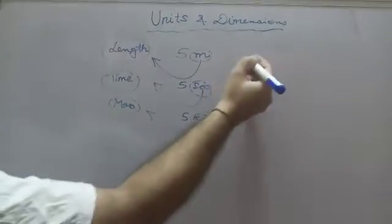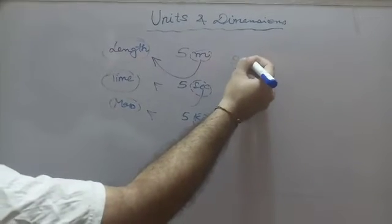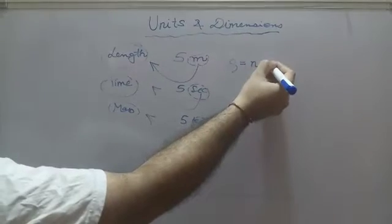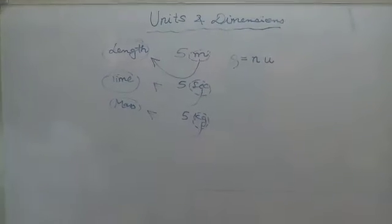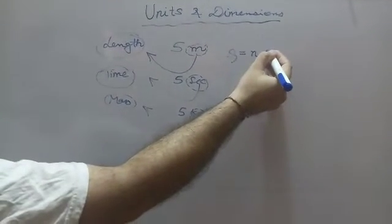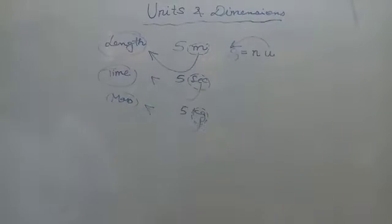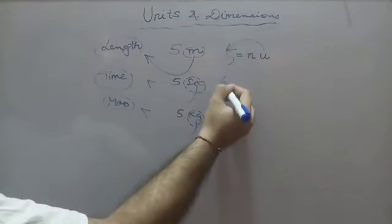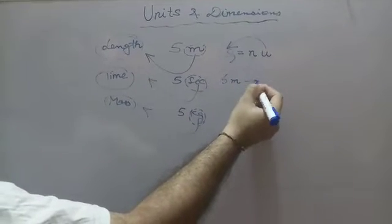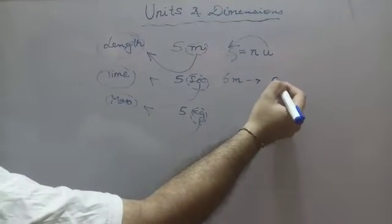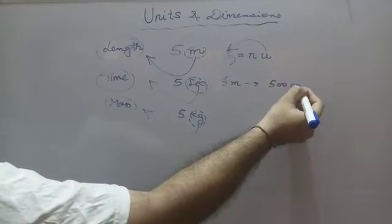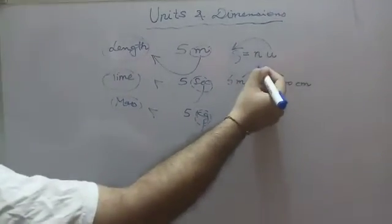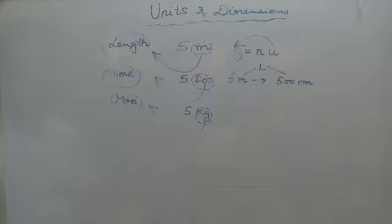We can write a physical quantity Q as n times u, where n is the numerical value and u is the unit. So the unit is something which gives us an idea about the physical quantity Q. For example, to convert five meters into centimeters, we write it as five hundred centimeters — both give us an idea about length.